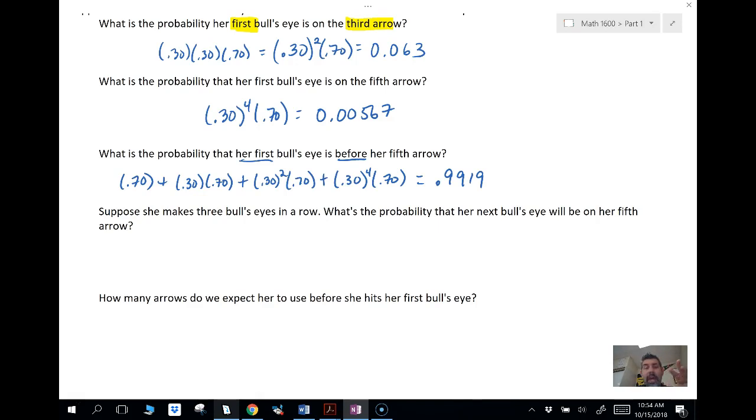And the fact that she makes the first three has no bearing because of independence on whether or not she makes the next two. So we don't really need to do 0.7 to the third. We already know she makes the first three, so this is kind of just extra information. We just really need to know what's the probability her next bullseye will be on the fifth one, which means she's going to miss the next one, which is her fourth shot, and then she's going to make her fifth one. All right, so then we're going to get 0.21 for our answer.